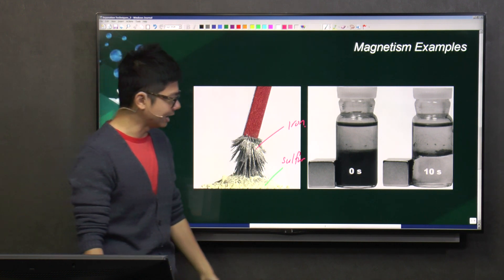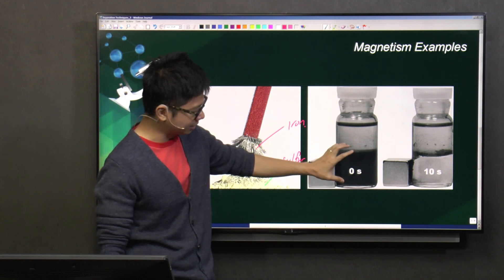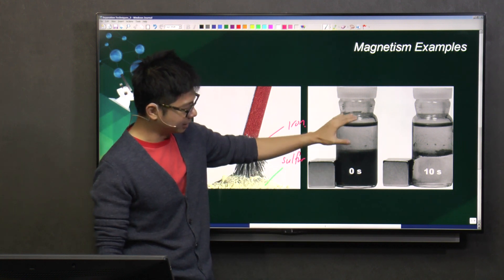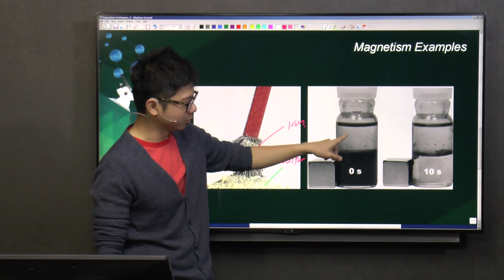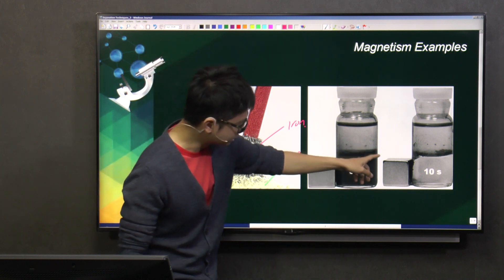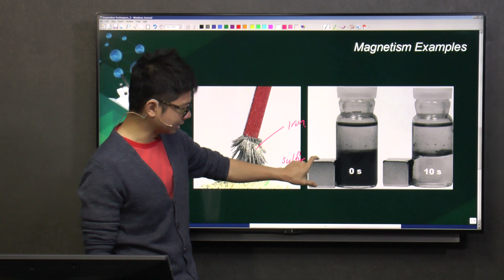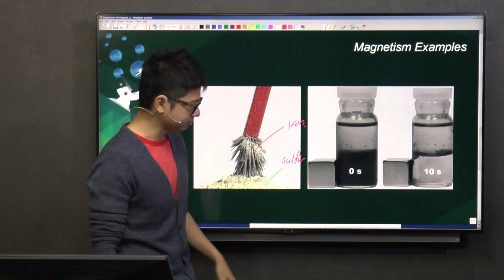And another example that I can show you, if let's say these iron filings are being placed together with water, right? It forms a suspension. Can you see that it's like, it's a black suspension. So, what can I do? I just take a magnet, put it by the side.